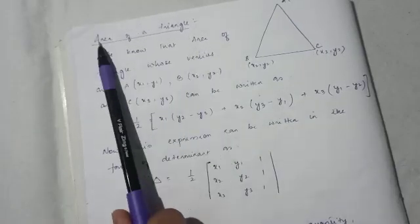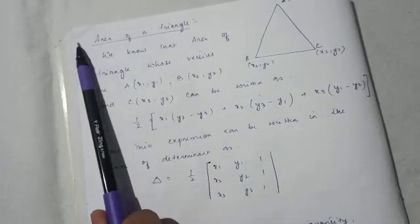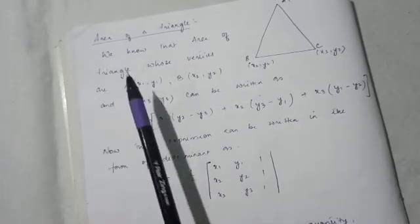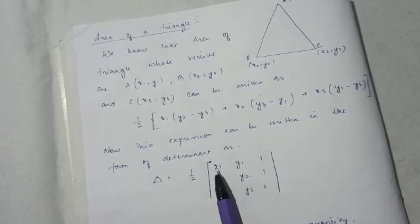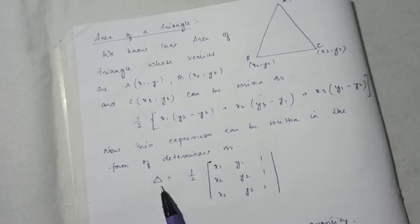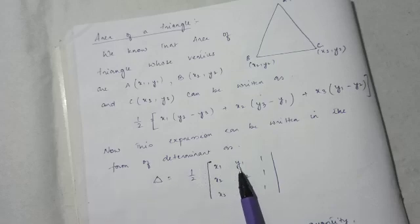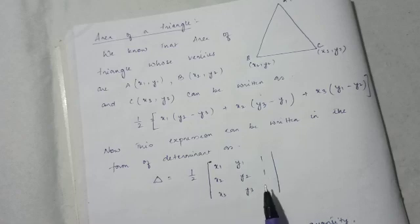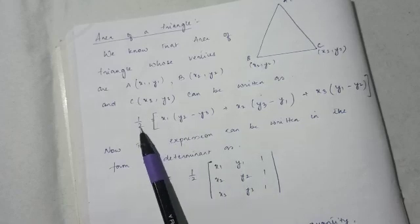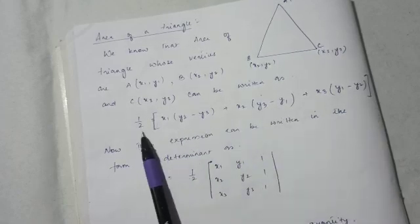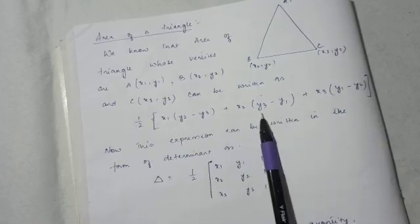This area of a triangle can also be written as a determinant: Area = 1/2 × |determinant of [X1, Y1, 1; X2, Y2, 1; X3, Y3, 1]|. If you solve this using the properties of the determinant, you'll get the same answer as the classical formula.